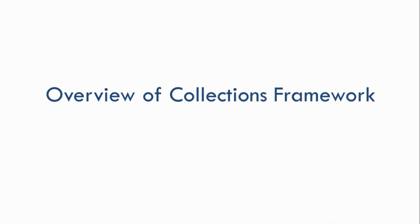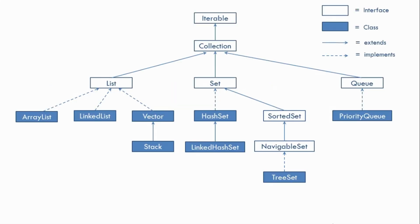Let's look at the hierarchy of these classes and interfaces. Here is the hierarchy. These types of boxes represent interfaces and these types of boxes represent classes. We also have a simple arrow for 'extends' and a dotted arrow for 'implements'.